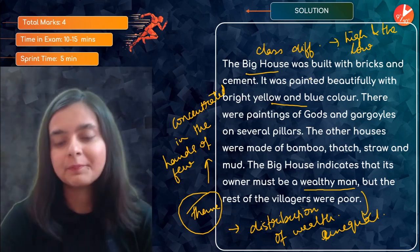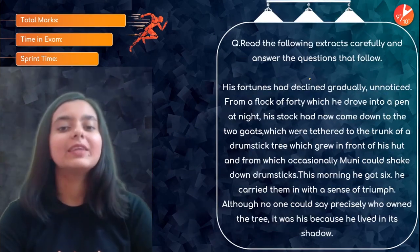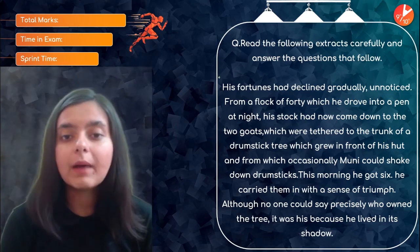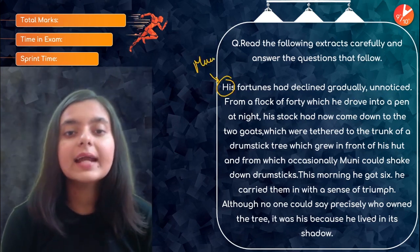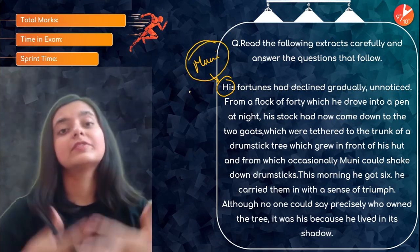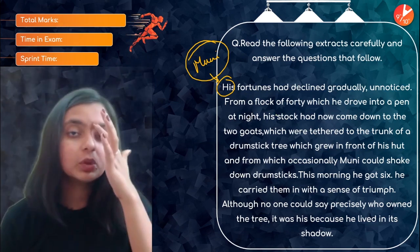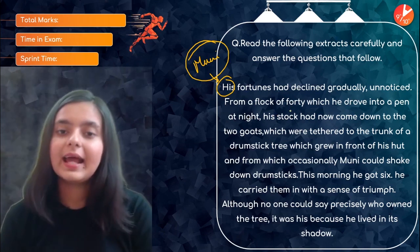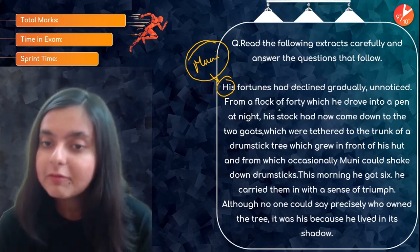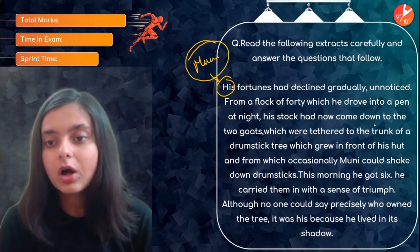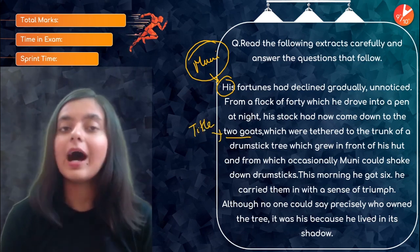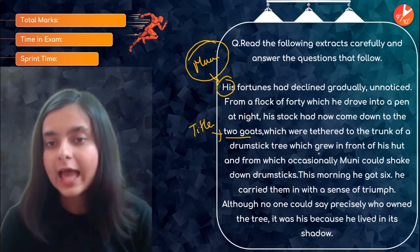The next passage discusses how Muni's fortunes declined gradually and unnoticed. Our protagonist Muni was once very prosperous but unfortunately his money declined. From a flock of 40 sheep and goats which he drove into a pen at night, his stock came down to just two goats — which connects directly to the title of the story, 'A Horse and Two Goats.' These two goats were tethered to the trunk of a tree.